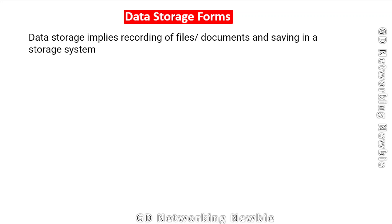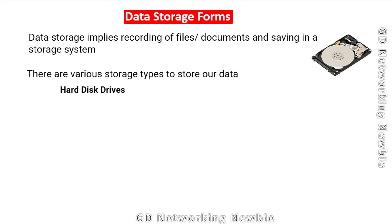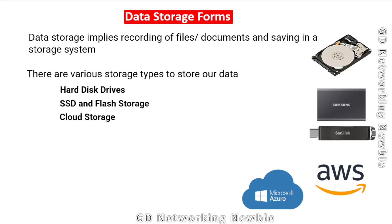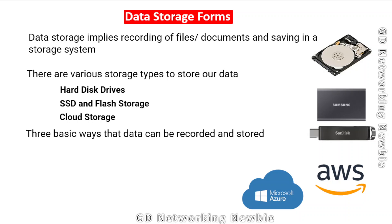For storing data we have been using different types of storage like hard disk drives, SSDs, and flash storage, and these days we also have cloud storage. These are different types of storage where we can save our data. The question is how they save data, and there are three basic ways data can be recorded and stored: file storage, block storage, and object storage.